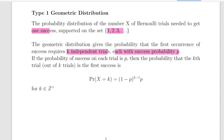If the probability of success on each trial is p, then the probability that the kth trial out of k trials is the first success is given by: (1 − p)^(k−1) × p. That is the Type 1 formula, and we're going to use that later on.